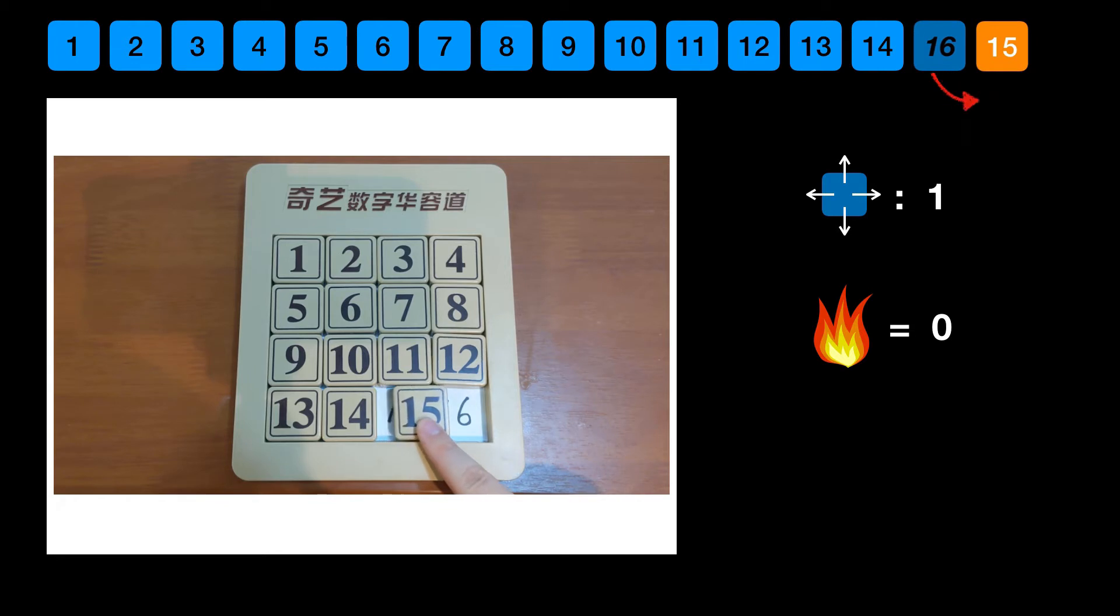When 15 slides to its right, we actually swap 15 with 16. Now 16 is before 15, so 15 is angry, and the rage plus 1.